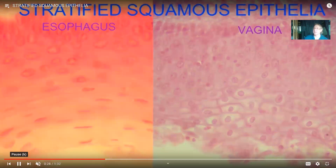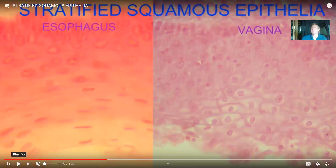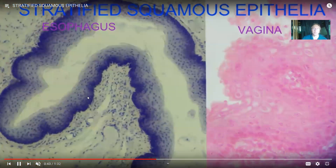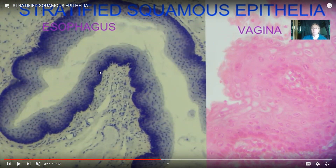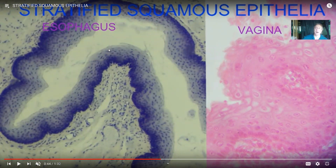One feature of epithelia is that they are avascular — there are no blood vessels. All blood vessels are in the deeper connective tissue. As cells divide and move farther toward the apical surface, they get farther from nutrients. Cell division occurs at the basal layer, and after a certain distance these cells are hard put to get oxygen and glucose, because nutrients must diffuse through the layers.